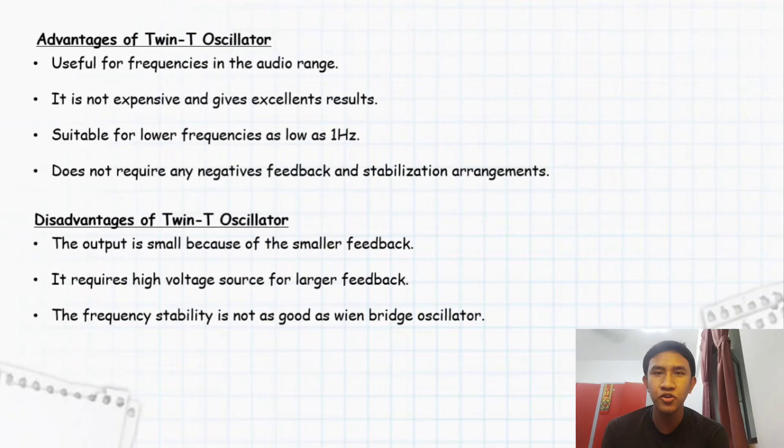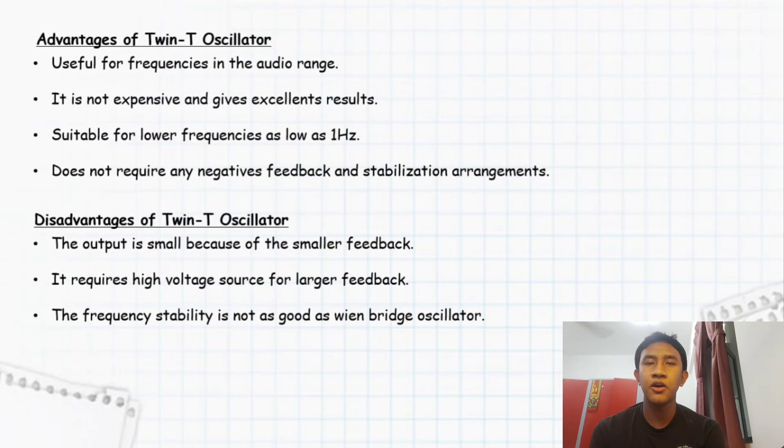Assalamualaikum warahmatullahi wabarakatuh. My name is Fahish Abil Zaidi. I am going to tell you about advantages of twin-T oscillator. The twin-T works very well for frequencies in the audio range. Twin-T oscillator is not very expensive and it gives us excellent results. The twin-T oscillator is also suitable for lower frequencies as low as 1 Hz. It does not require any negative feedback and stabilization arrangement. Next, I will talk about the disadvantages of the twin-T oscillator. The output of this oscillator is low because of the smaller feedback, and it also requires high voltage source for larger feedback. For your information, the frequency stability of twin-T oscillator is not as good as Wien bridge oscillator.